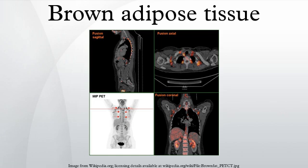Brown fat cells and muscle cells both seem to be derived from the same stem cells in the embryo. Both have the same marker on their surface, which white fat cells do not have. Brown fat cells and muscle cells both come from the middle embryo layer.